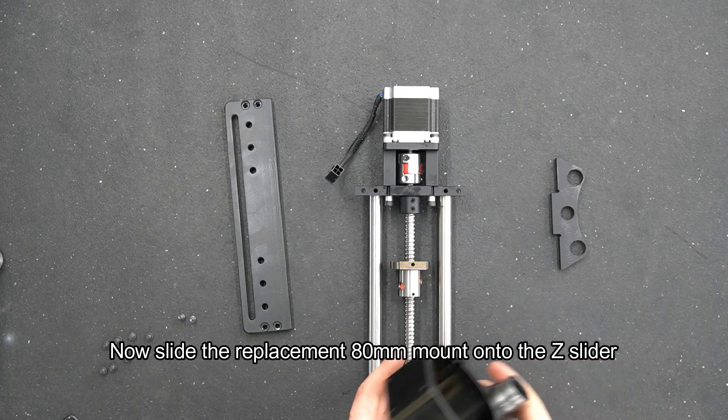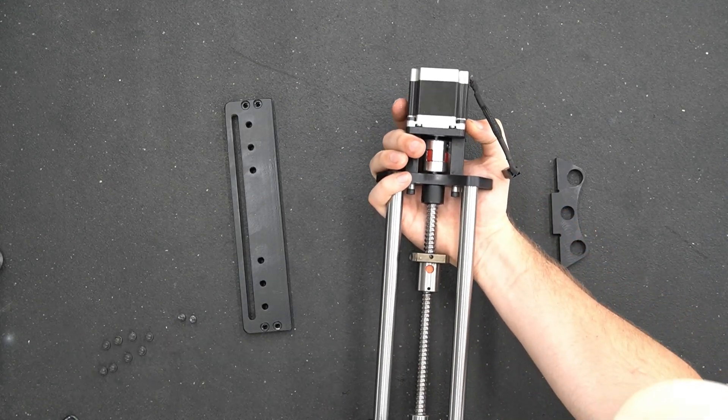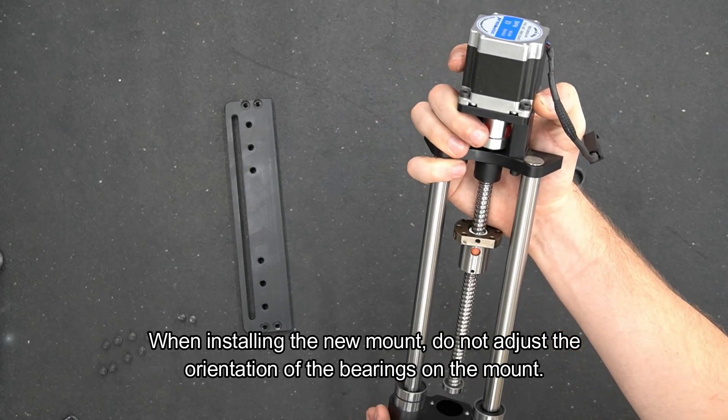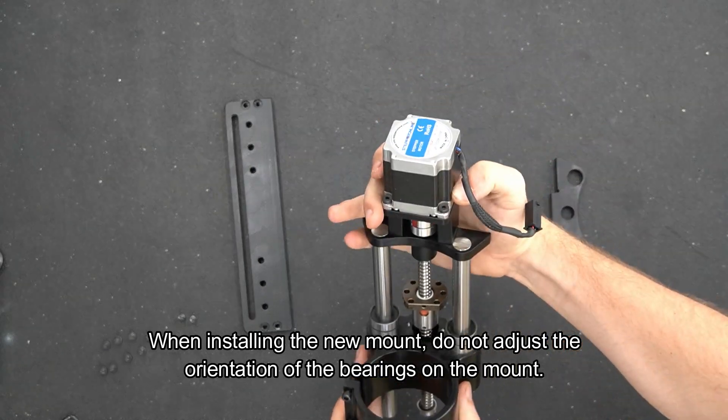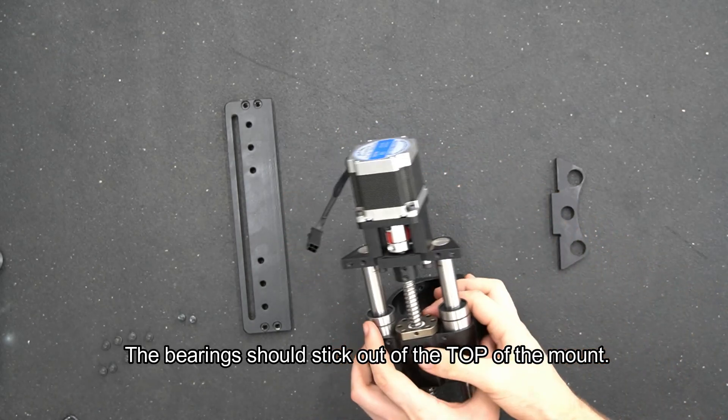Now slide the replacement 80mm mount onto the Z slider. When installing the new mount, do not adjust the orientation of the bearings. The bearings should stick out of the top of the mount.